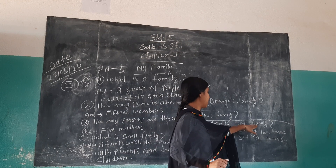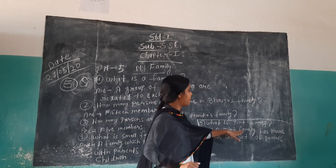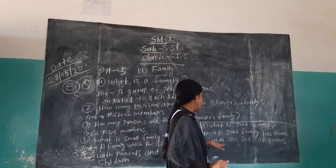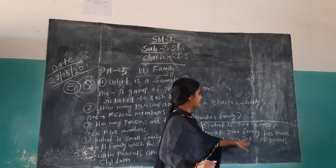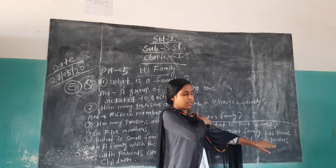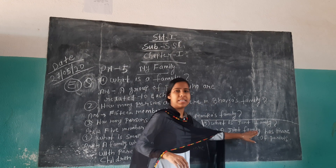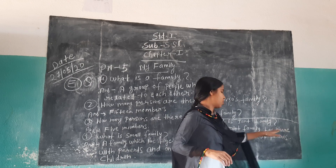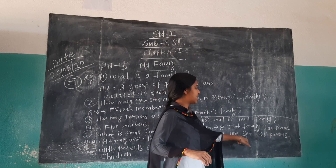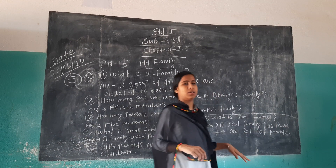Number 5: What is a joint family? A joint family has more than one set of parents and had more than one set of parents living together.